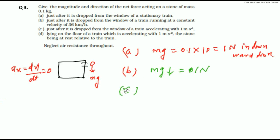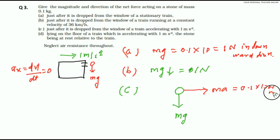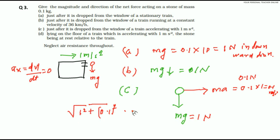Part C: just after it is dropped from the window of a train accelerating with 1 meter per second square. The stone goes in the downward direction with force mg, but because the train is moving with 1 meter per second square in the horizontal direction, the stone has two types of acceleration — one is mg in the downward direction and the other in the horizontal direction due to inertia, since the train is accelerating. The stone also has the same acceleration as the train. So, m into a equals 0.1 into 1 equals 0.1 Newton horizontally and mg equals 1 Newton vertically. The net force equals under root of 1 squared plus 0.1 squared.